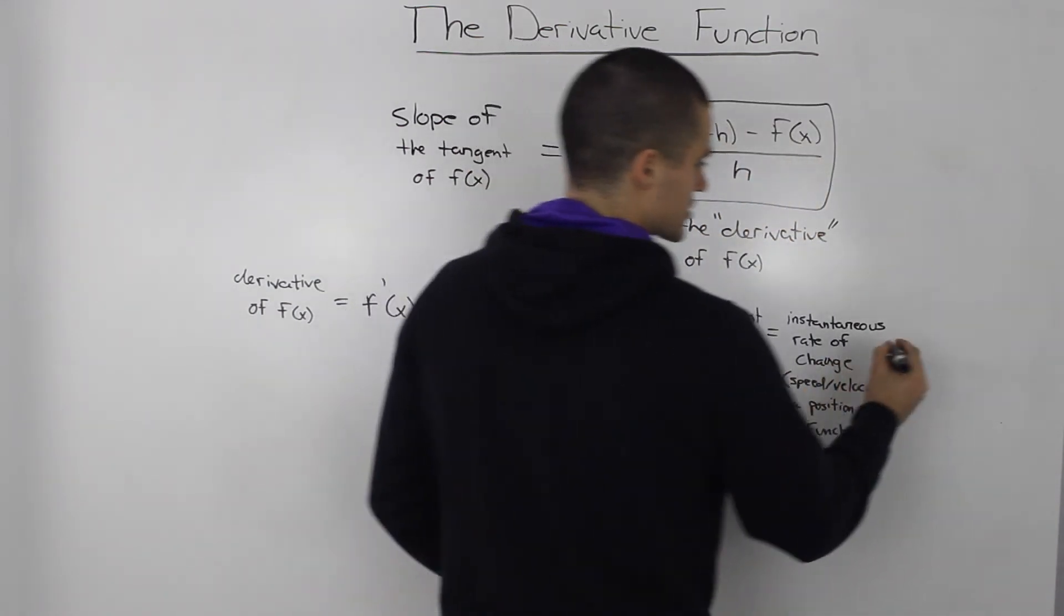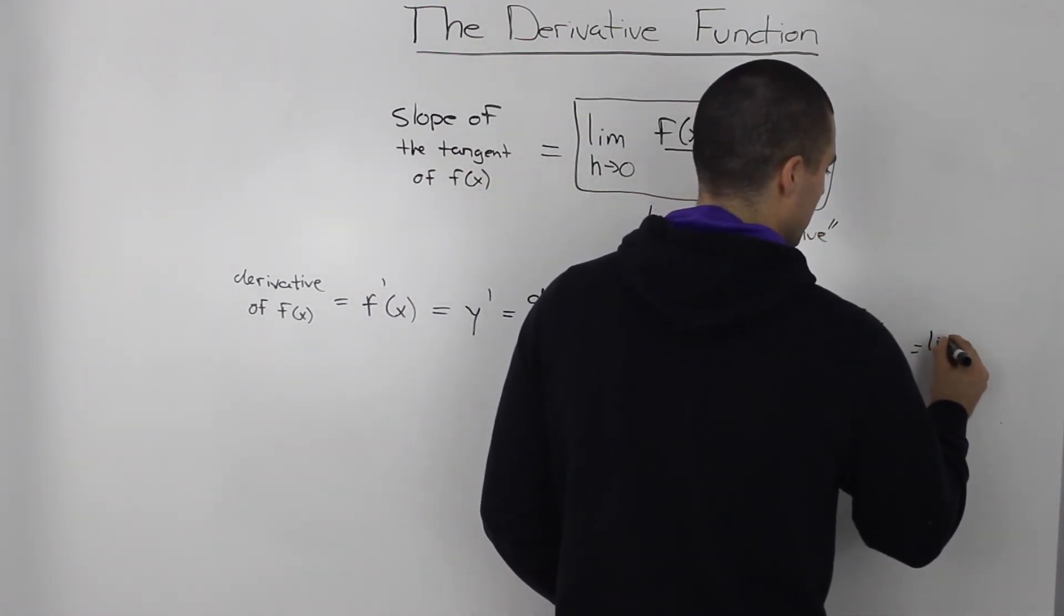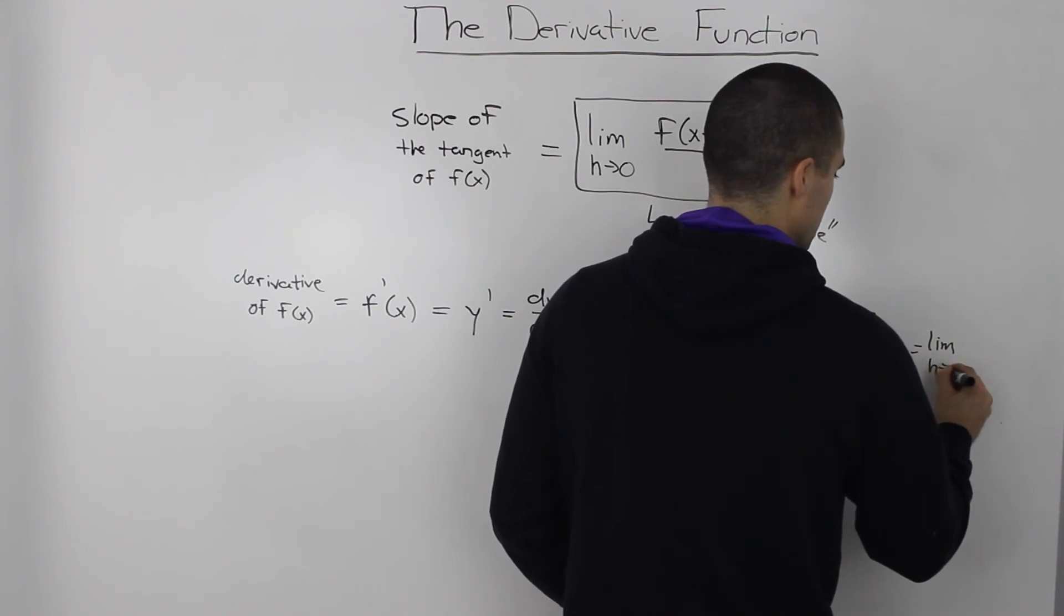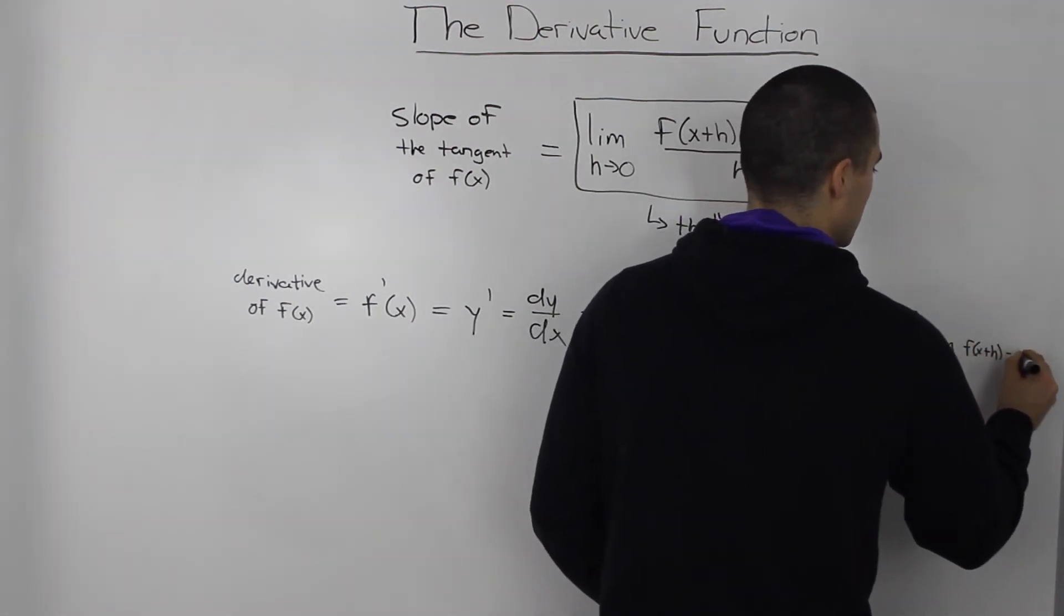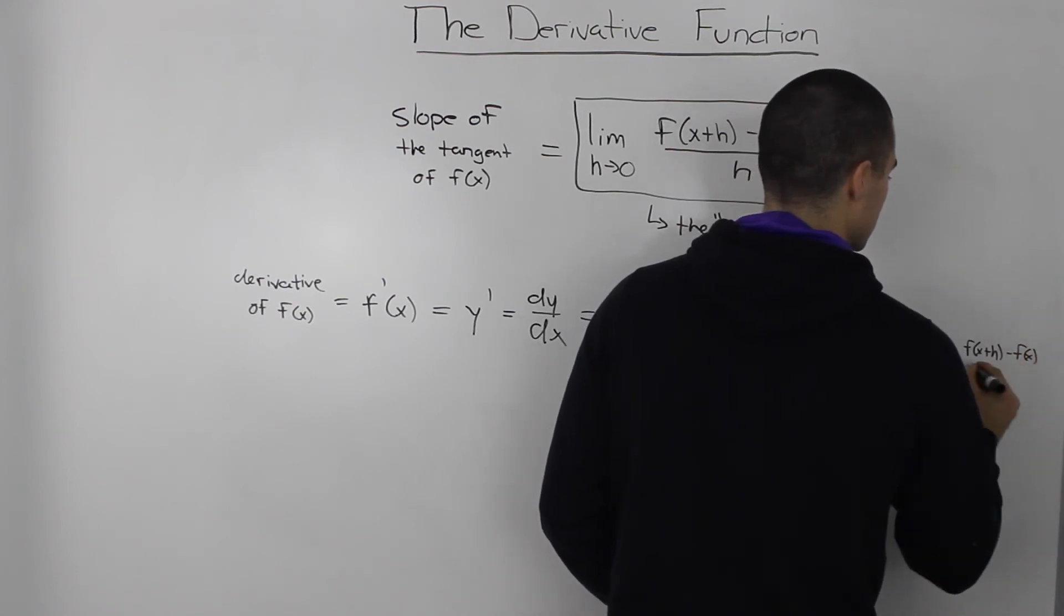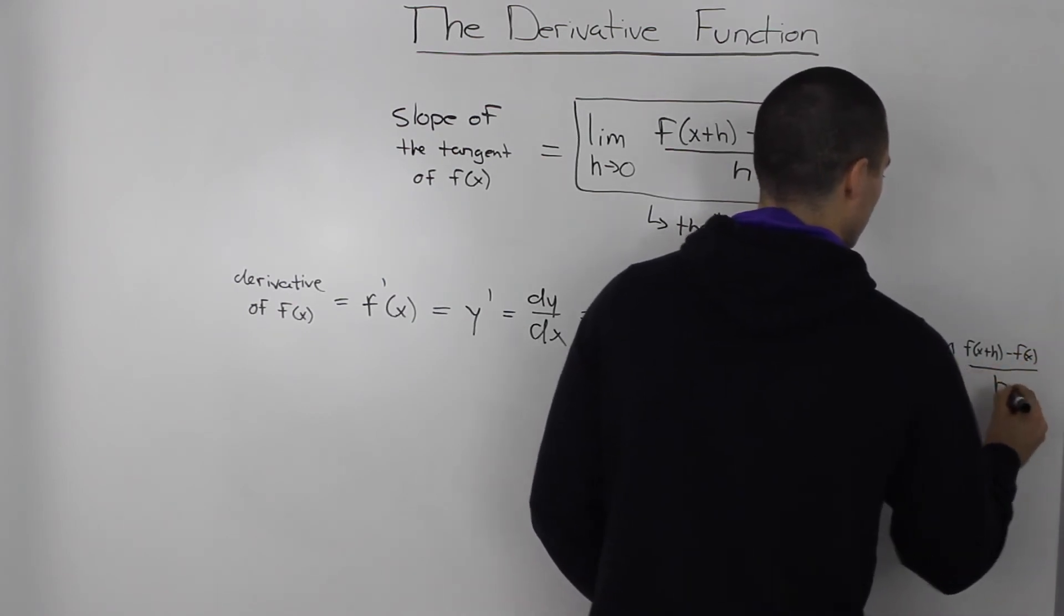And all of these things are basically found by the difference quotient. So taking the limit as h goes to zero of f of x plus h minus f of x all over h.